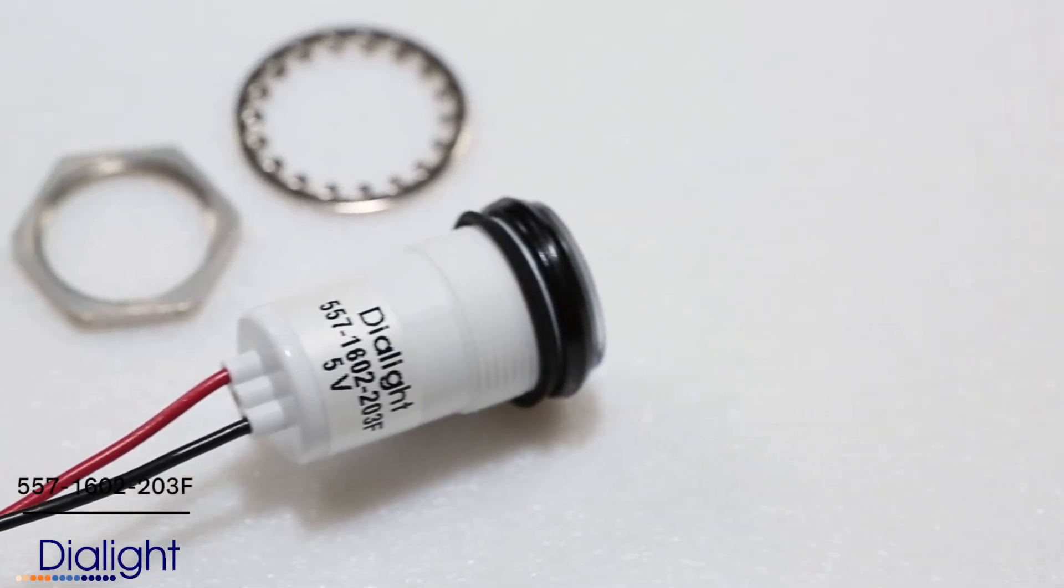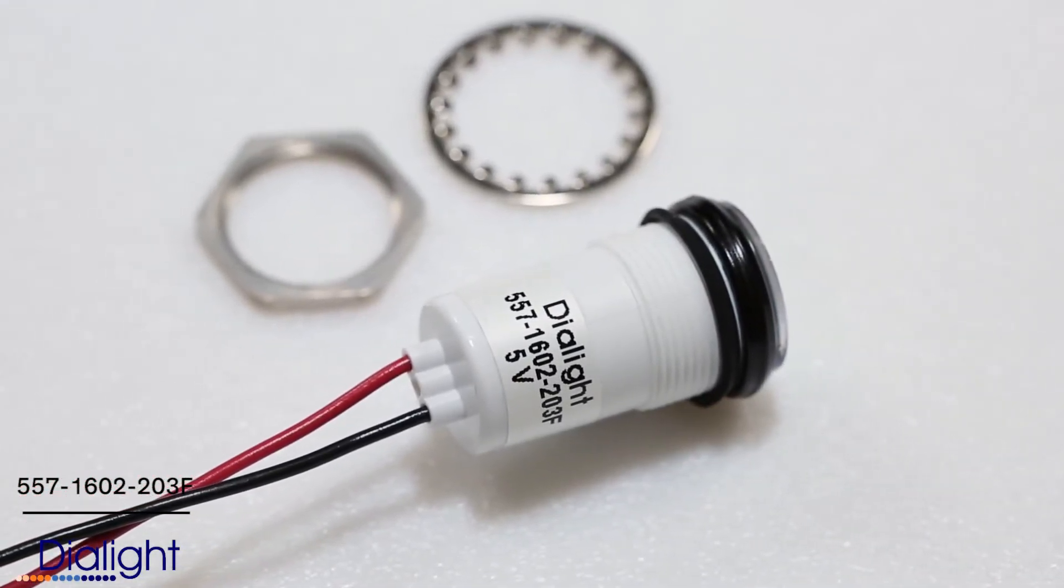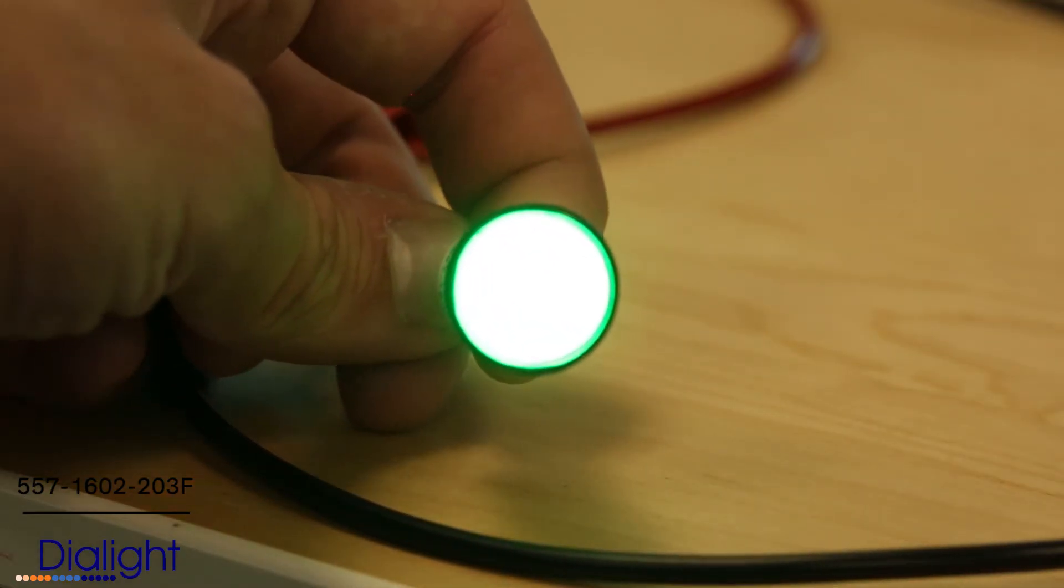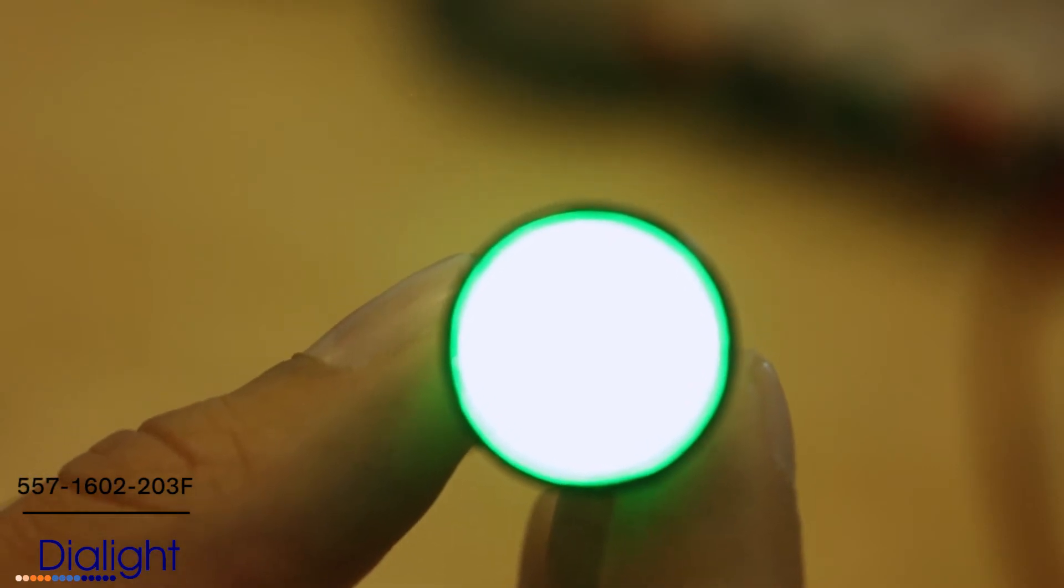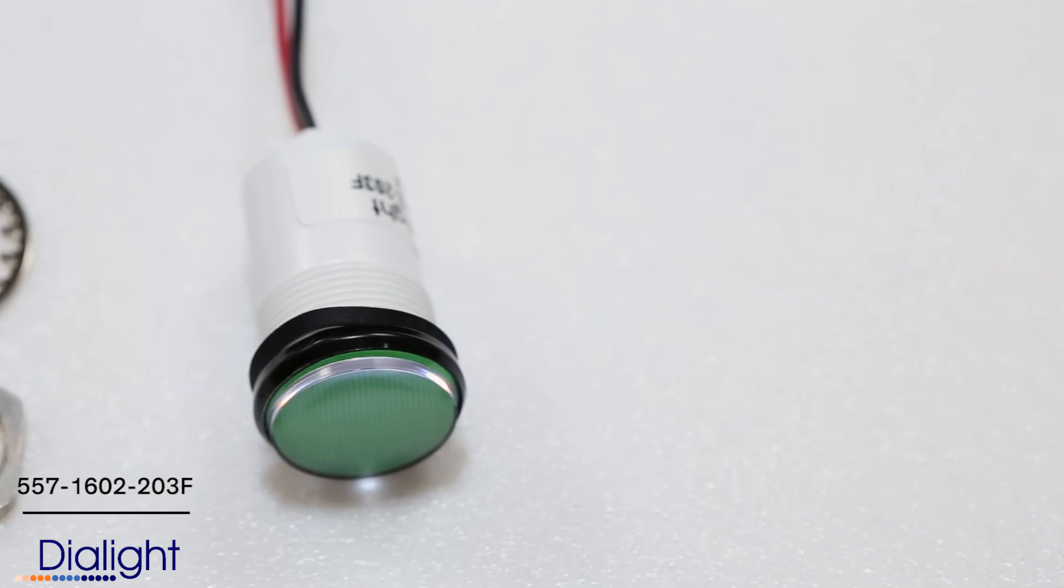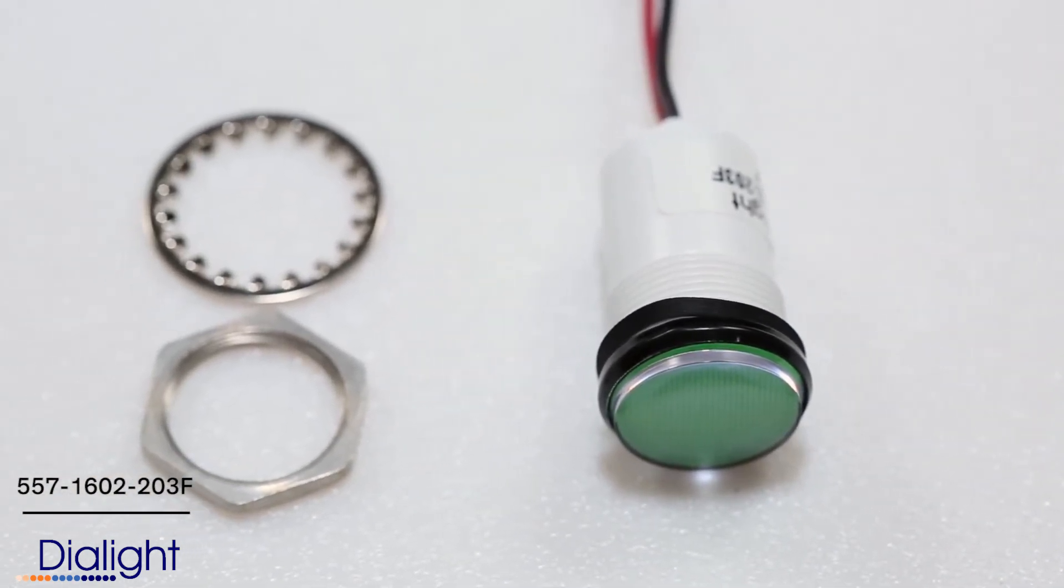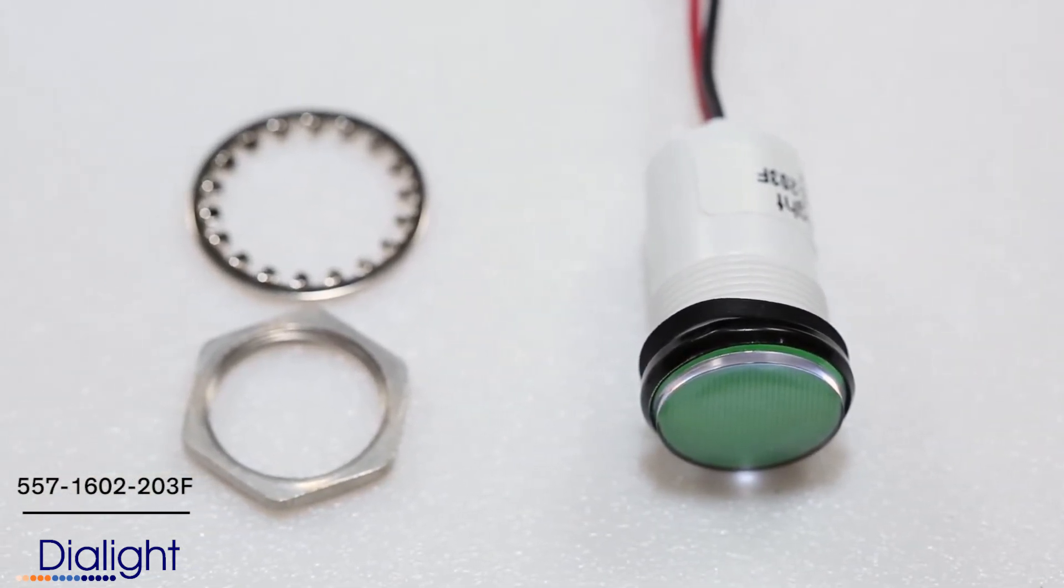Dialite's 557 series of high-intensity LED panel mount indicators offers an unmatched level of brightness with their multi-LED construction, designed to be visible in full daylight. Combine that with their highly durable package and these indicators are perfect for outdoor applications susceptible to rain, dust, and intense sunlight.